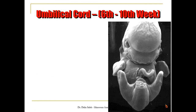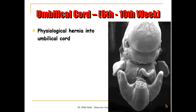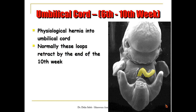From the sixth to the tenth week of development, major organs are forming — especially the liver, kidneys, and the gut is developing. There is not enough room inside the small abdominal cavity for the intestine, so they are forced to herniate outside the abdominal cavity into the umbilical cord. We call this physiological hernia. Loops of intestine are present inside the umbilical cord, and normally they retract back into the abdominal cavity by the end of the tenth week.